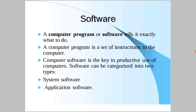The computer program or software tells the computer exactly what to do. A computer program is a set of instructions to the computer. Computer software can be categorized into two types: system software and application software. Generally, software is written in some high-level language for a commercial purpose.